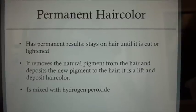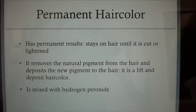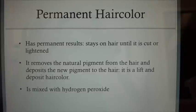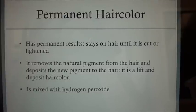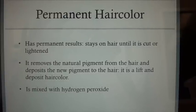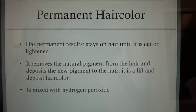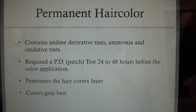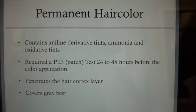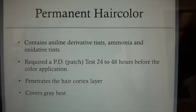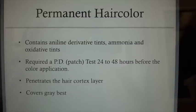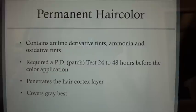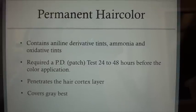Permanent hair color has permanent results — it stays on the hair until it is cut or lightened. It removes the natural pigment from the hair and deposits new pigment. It is a lift-and-deposit hair color mixed with hydrogen peroxide. Permanent hair color contains aniline derivative tints, ammonia, and oxidative tints. It requires a PD patch test 24 to 48 hours before color application. It penetrates the hair cortex layer and covers gray best.